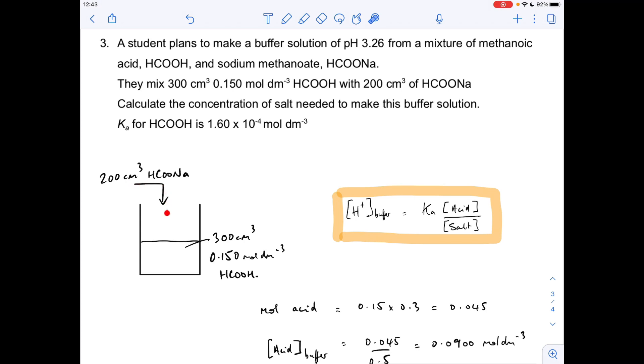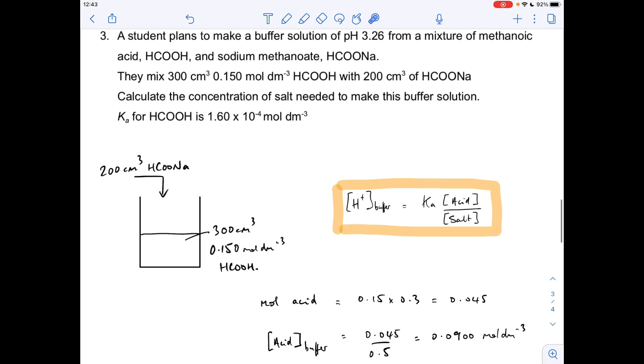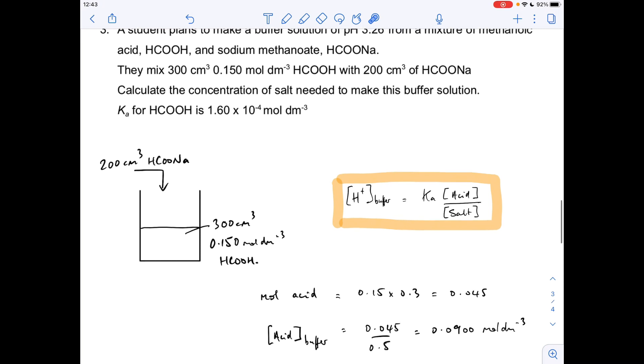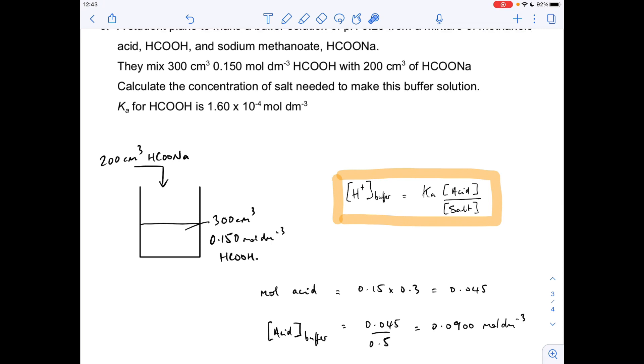When that 200 cm cubed goes in, the volume of the buffer is 500 cm cubed or 0.5 of a dm cubed. So the concentration of the acid in the buffer: moles divided by that new volume, 0.09 moles per decimeter cubed.